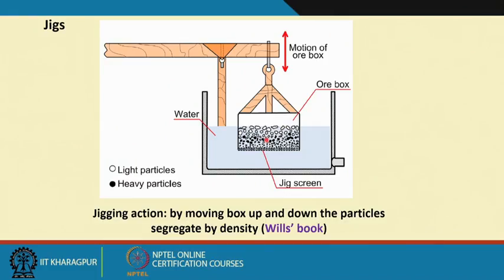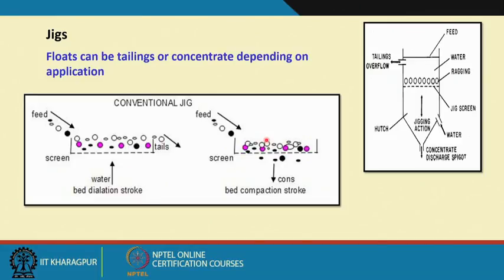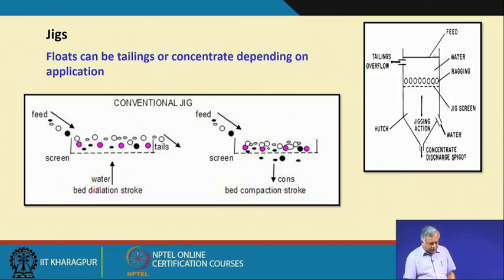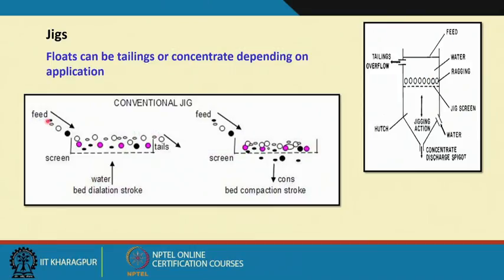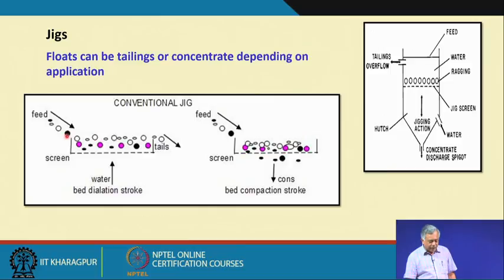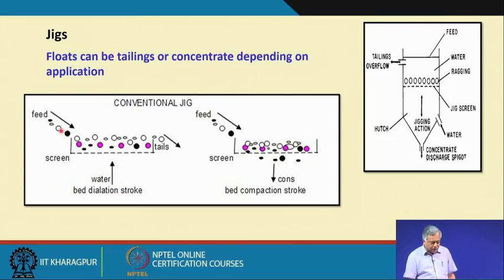This principle is known as the jigging principle. Now for mineral particles — if I have a screen, the screen apertures should be such that all the particles can rest on them. This is the feed stream. The earlier one I showed you is a batch type process. Now suppose I want to make it a continuous process. The dark colored particles are heavier and the lighter colored particles are basically the lighter particles.